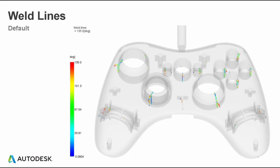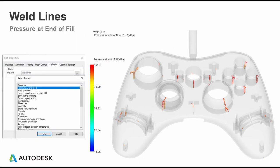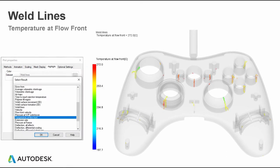The default view is valuable in its own right, but if you go into Plot Properties and go to the Highlight tab, you can change the weld lines to map them by other properties. In this particular case, I'm looking at weld lines but also showing the pressure at end of fill in those weld line areas — so now I'm getting a pressure at the weld. Something with a higher pressure could have a higher strength in that weld line area. We can also do a temperature at flow front, and while we're still looking at the weld line, we're seeing the temperature of the material that forms the weld. A hotter melt could have a potentially stronger weld line.